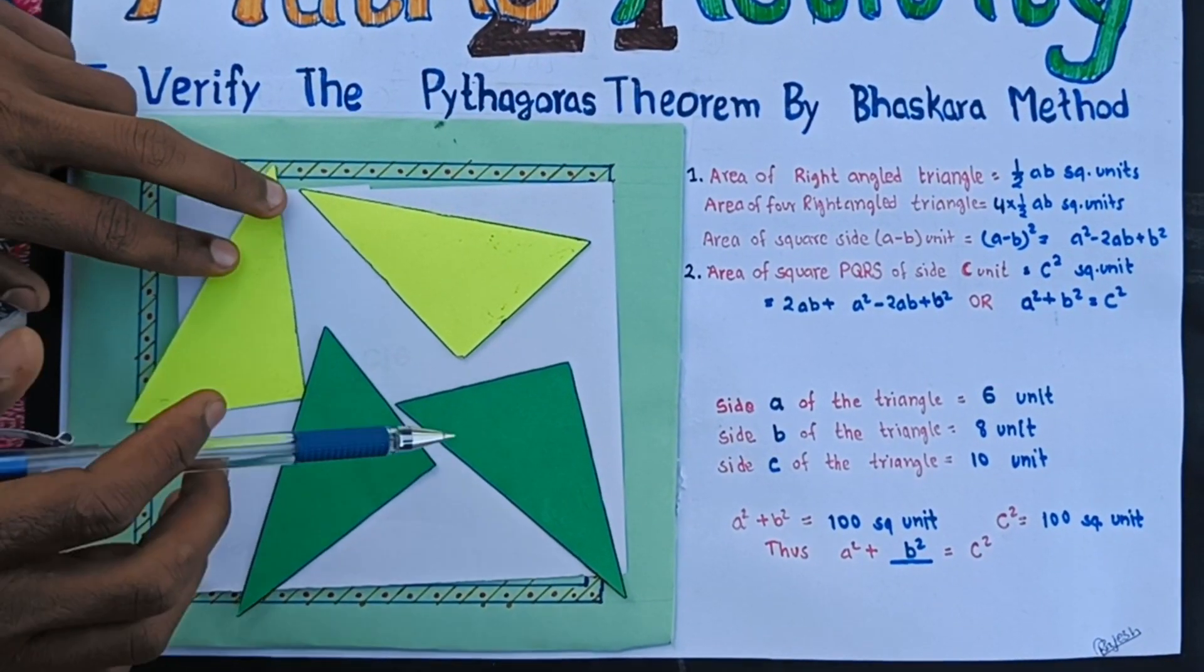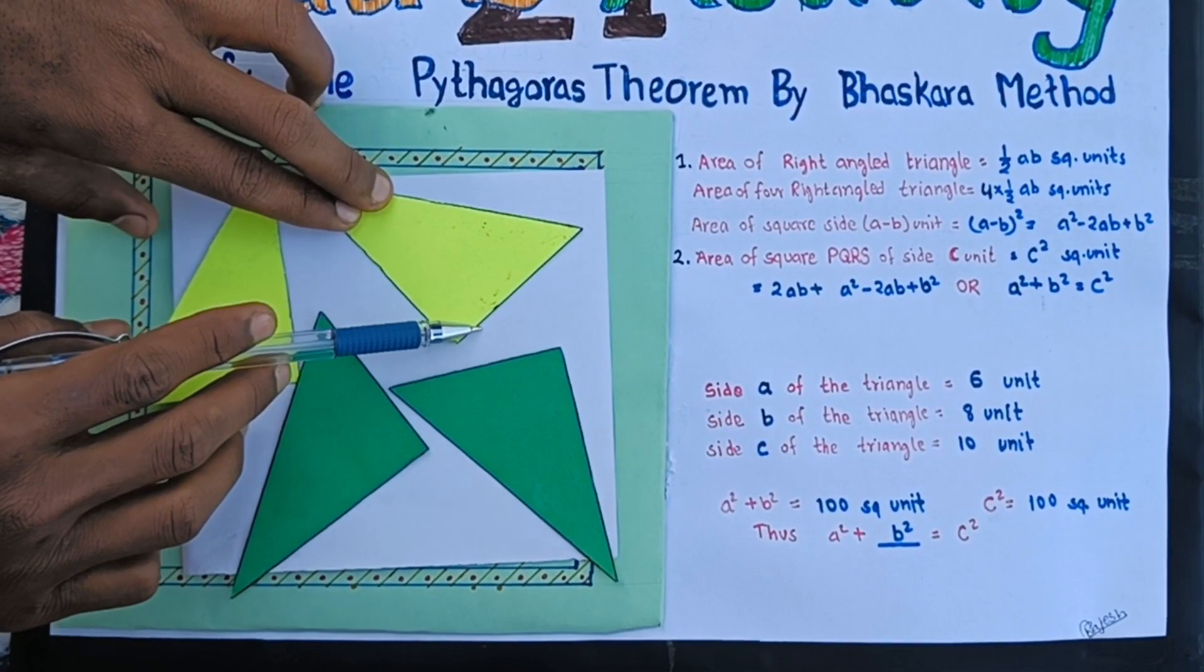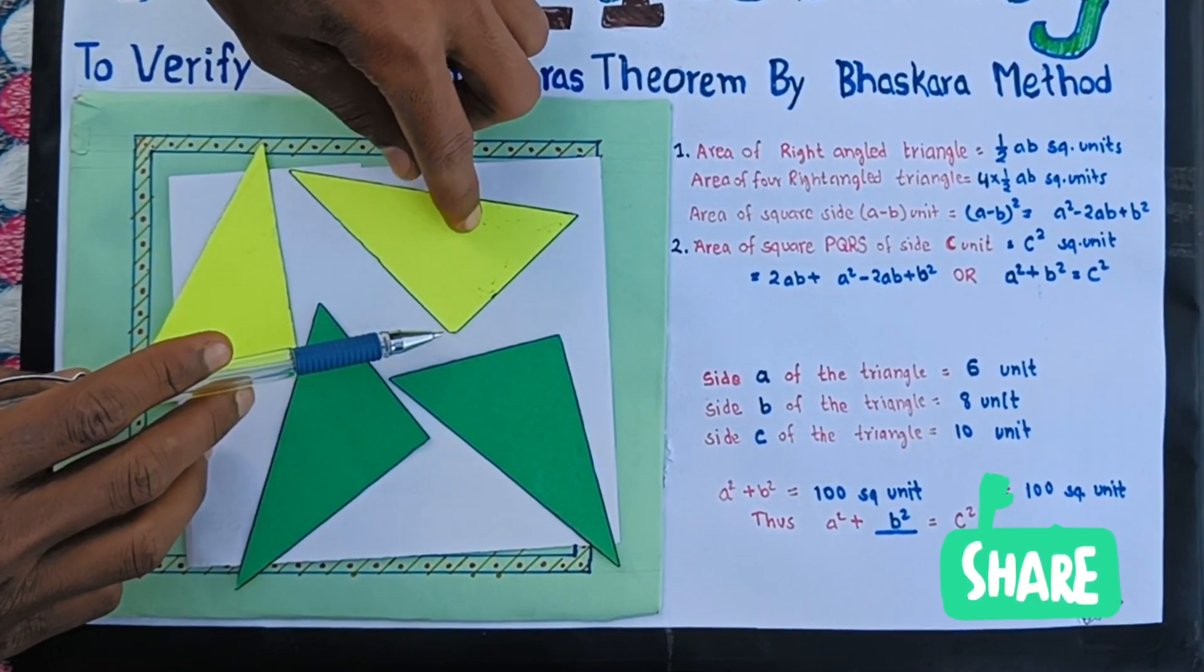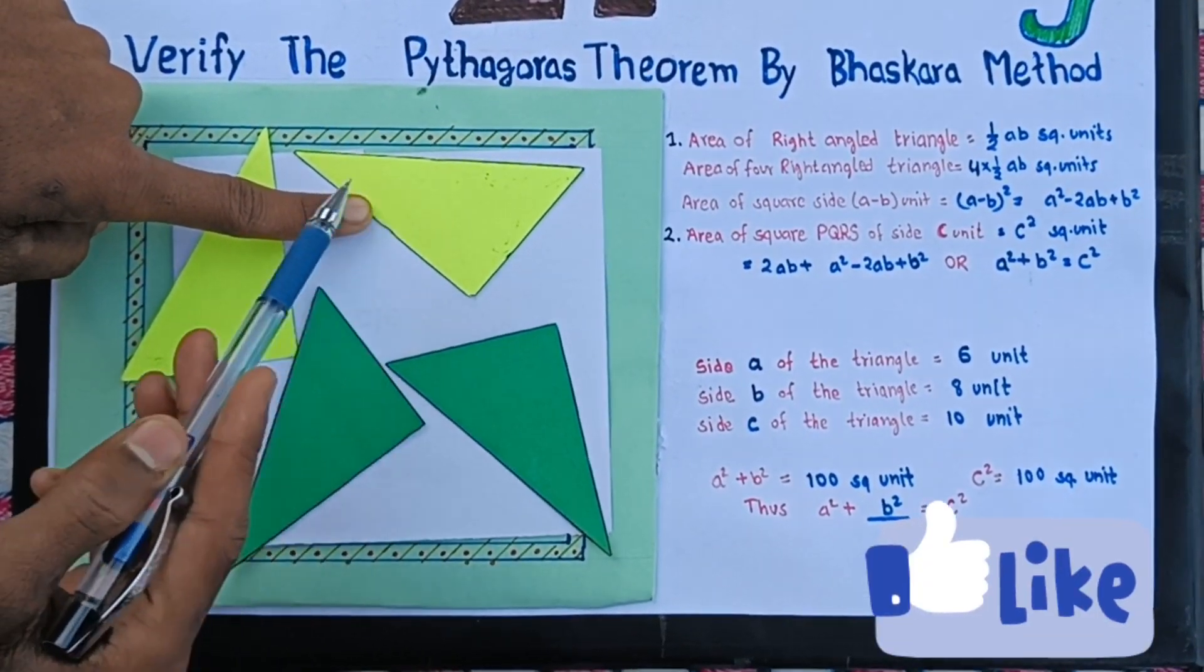Here we take four congruent right-angled triangles with base A unit equals 6 cm, perpendicular side B unit equals 8 cm, and hypotenuse side C unit equals 10 cm.